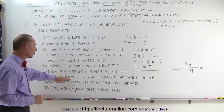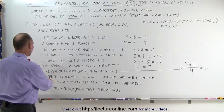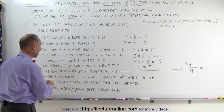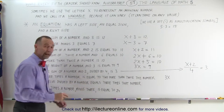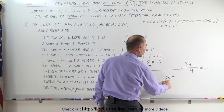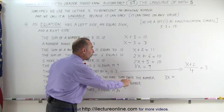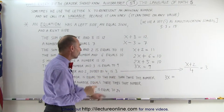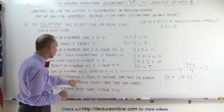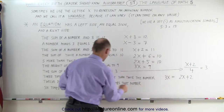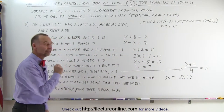The next sentence says: 3 times a number is equal to 2 more than twice a number. It's getting a little complicated, but we'll take it one step at a time. First we write 3 times the unknown number x, so we start with 3x, then an equal sign. '2 more than twice the number' — twice the number is 2x, and 2 more means add 2 to that. So: 3x = 2x + 2.